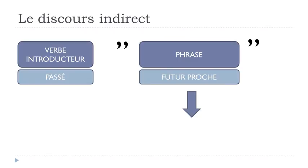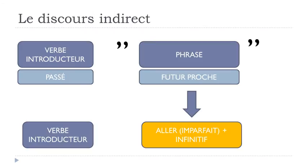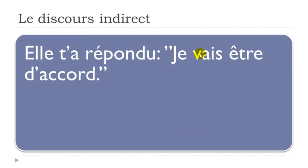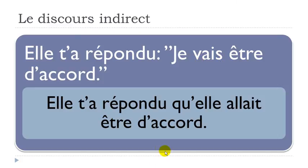If you have the futur proche in the second part, it becomes aller at the imparfait plus l'infinitif. Example: elle t'a répondu, je vais être d'accord — je vais is aller at the present form. To transpose into discours indirect, this second part changes: aller goes to imparfait, giving elle allait être d'accord. Result: elle t'a répondu qu'elle allait être d'accord.